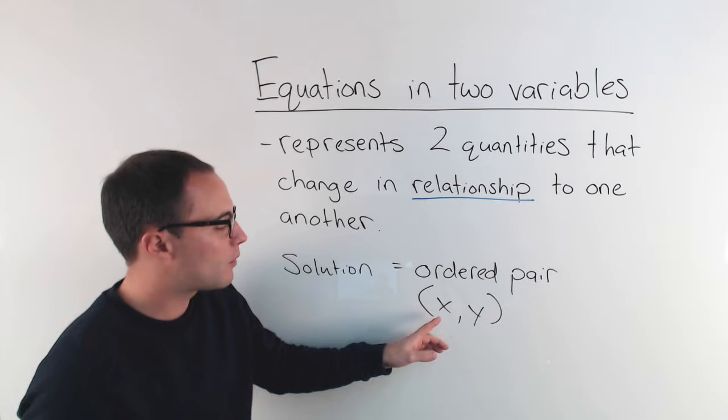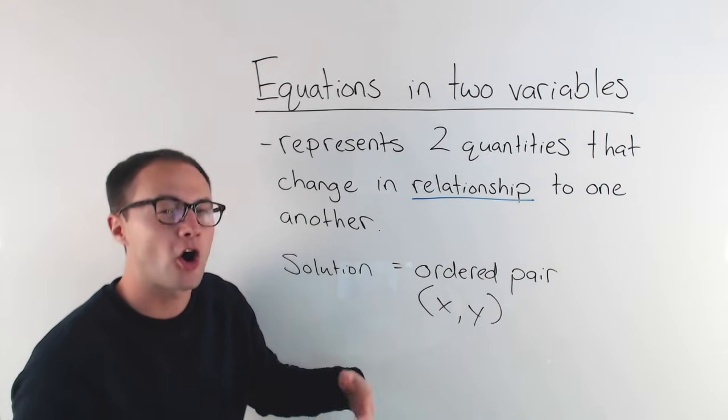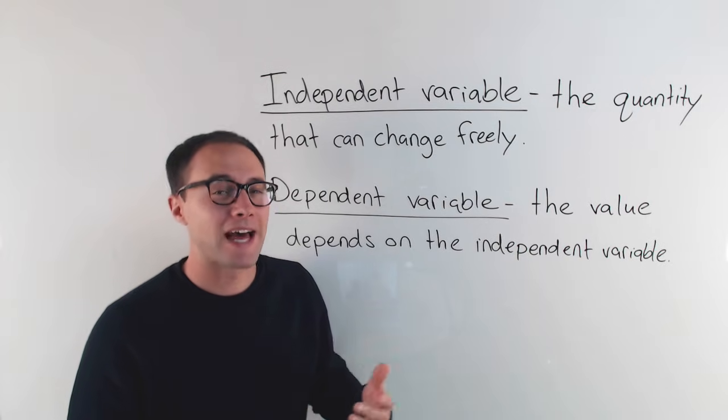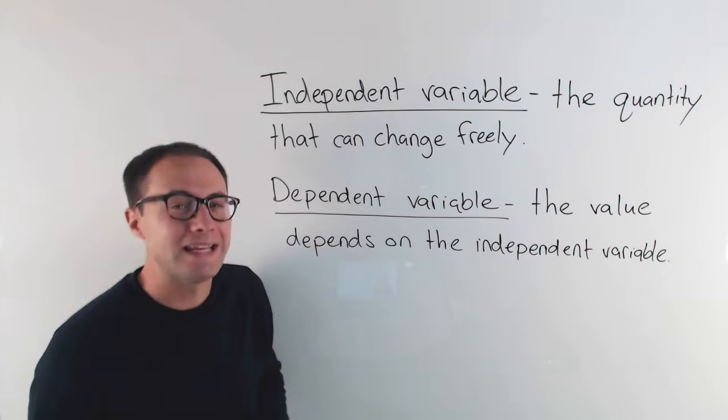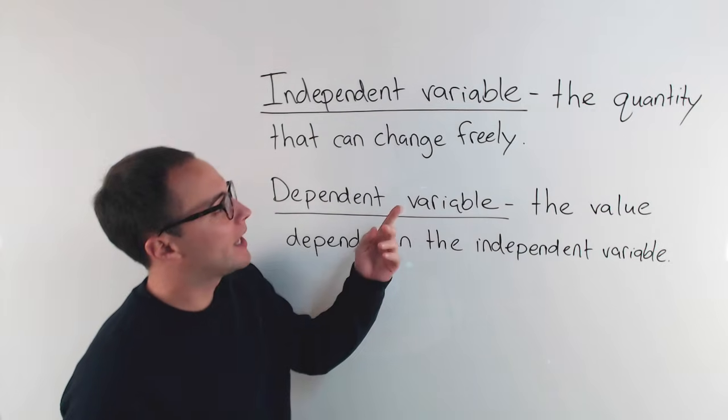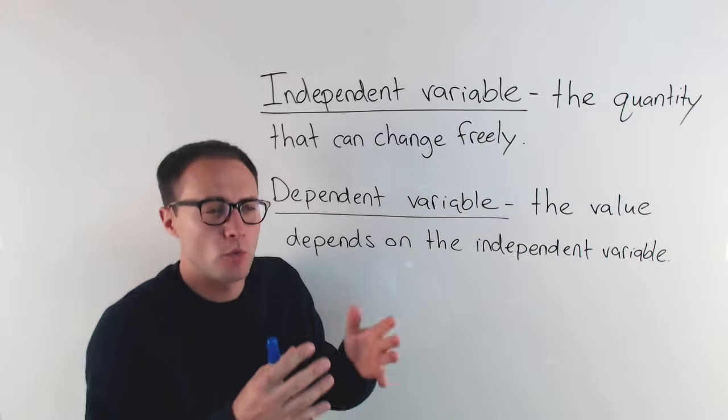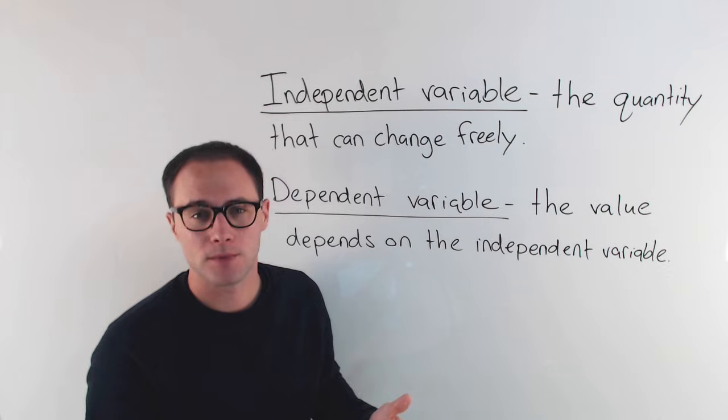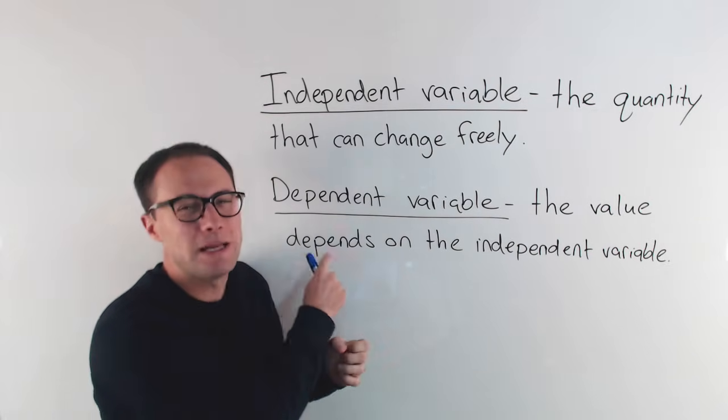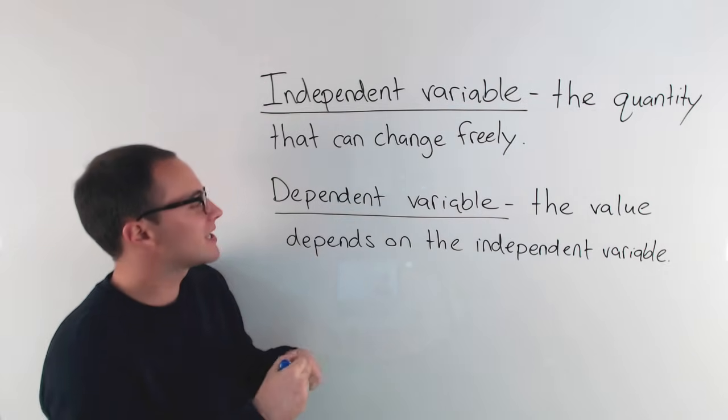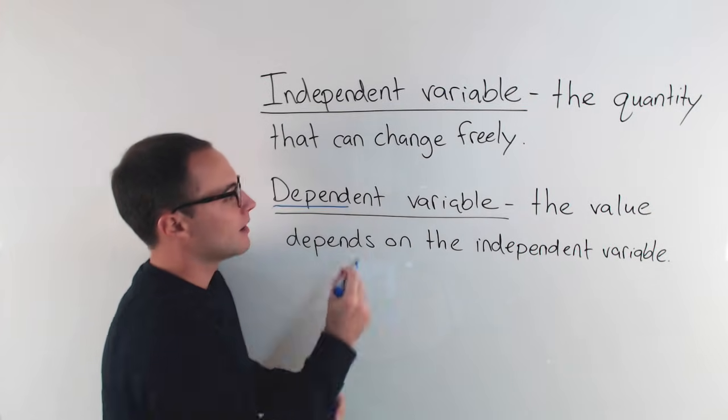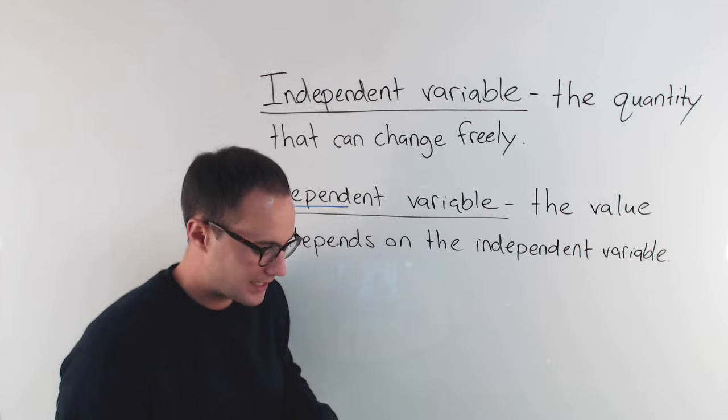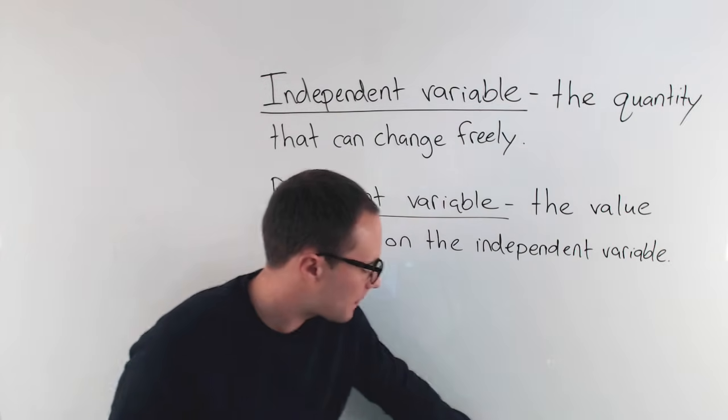Let's talk a little bit more about what these values are called. The two variables in these types of equations have names. First one we call the independent variable, and that's just a quantity that can change freely. Basically, we choose what that value is for that variable. The second variable we call the dependent variable. And just like the name, the value depends on what the independent variable is. That might be a little bit confusing, but for example...